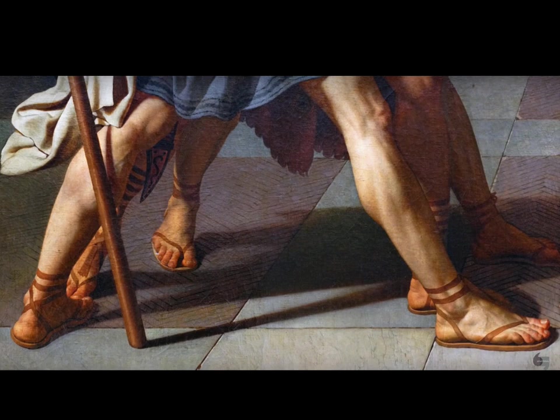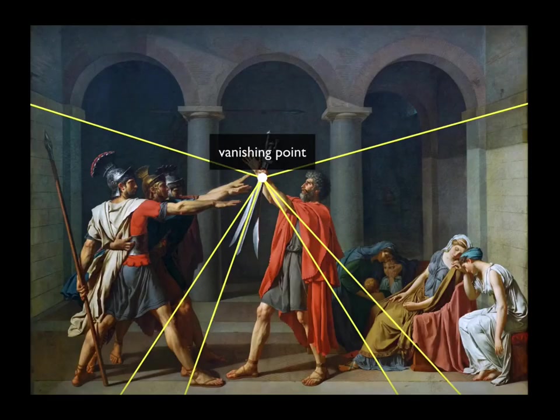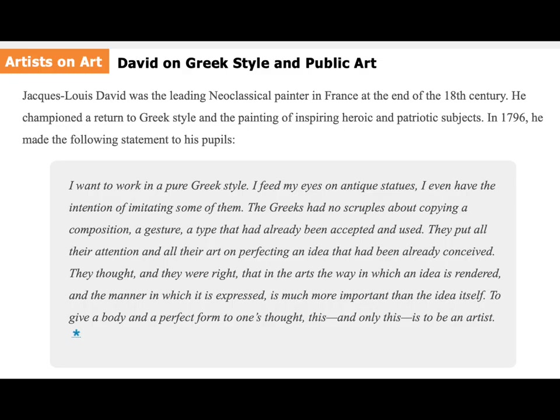We see the father holding swords as his sons take an oath to battle to the death. The anatomy is inspired by ancient Greek and Roman art. If we were analyzing the linear perspective, this would be the vanishing point.